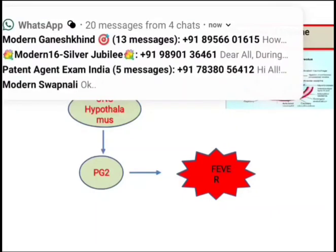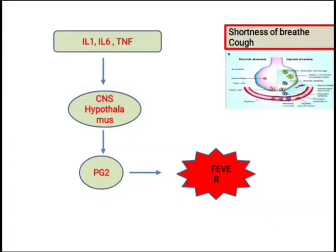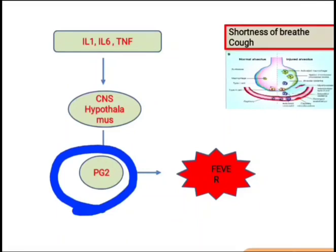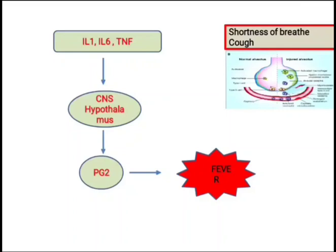Inflammatory mediators travel to the CNS and reach the hypothalamus, where they cause prostaglandin to release a molecule which causes fever induction and a rise in body temperature — which is a symptom of COVID-19. So there is shortness of breath, cough, and fever.